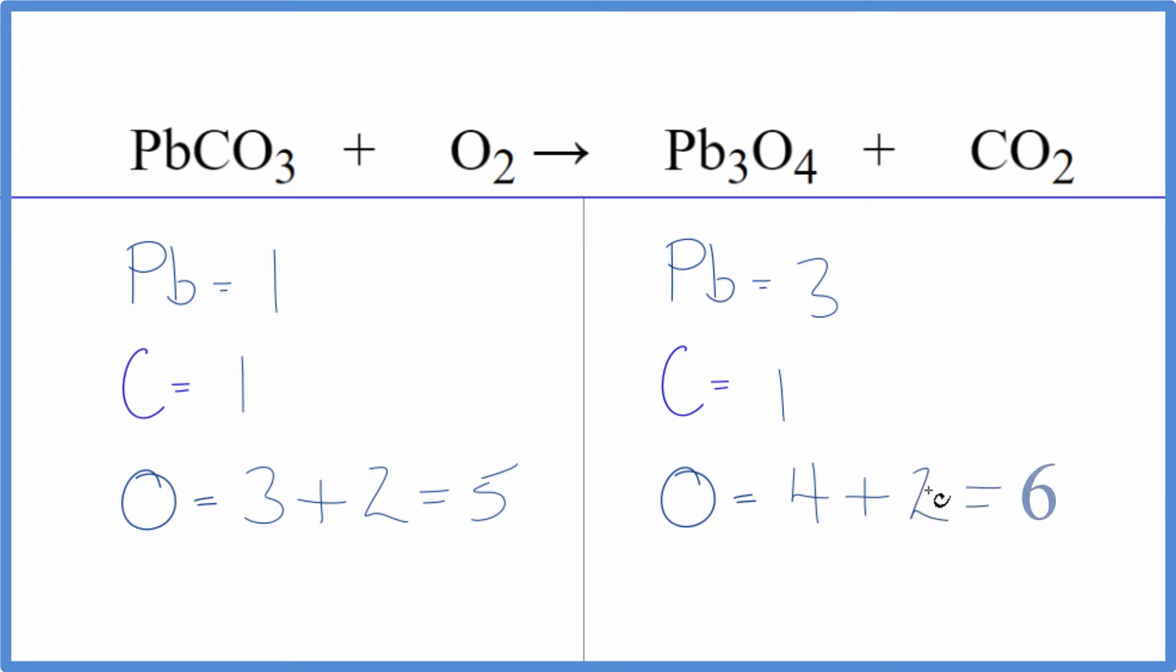I like to leave the oxygens till last when I'm balancing equations, especially when I have O2 by itself. So here I think if we put a 3 as our coefficient, we have 1 times 3. That would balance the lead atoms. Carbons, 1 times 3. That gives us 3.